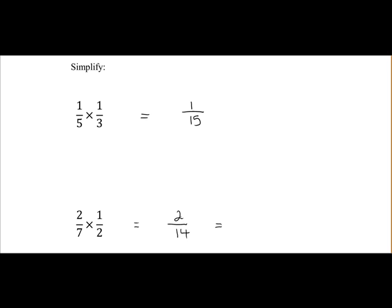So 2 divided by 2 is 1. 14 divided by 2 is 7. So that's it in its lowest form. So 2 over 14, that's the same as 1 over 7.